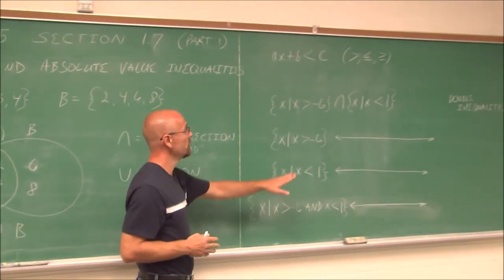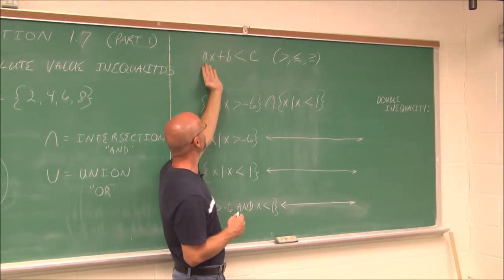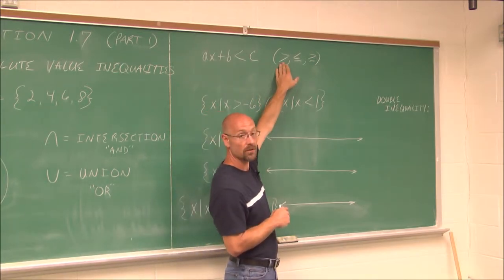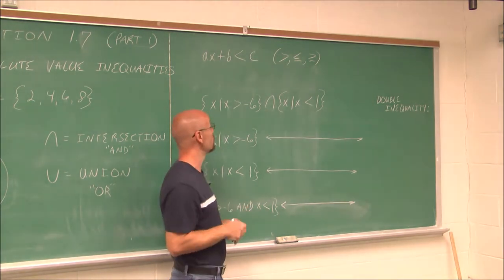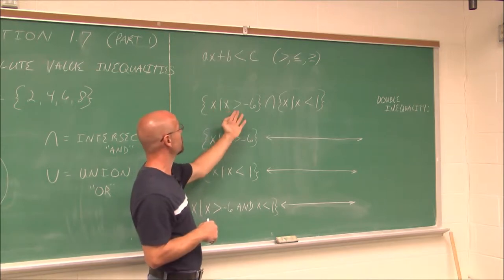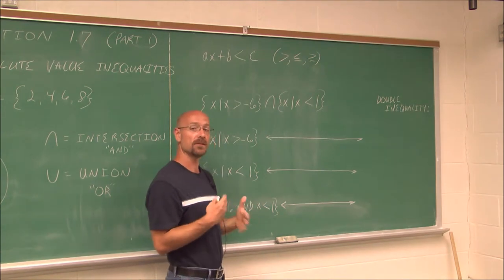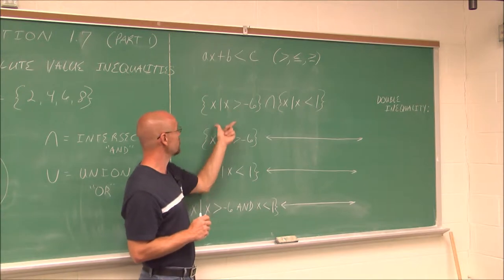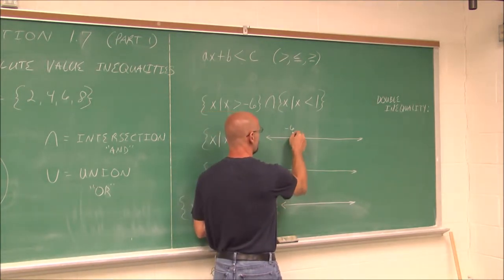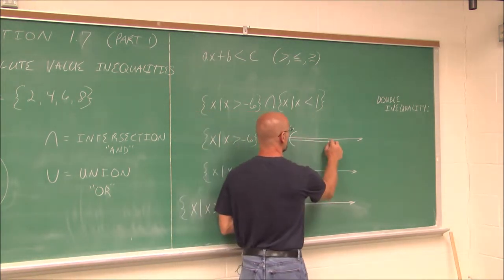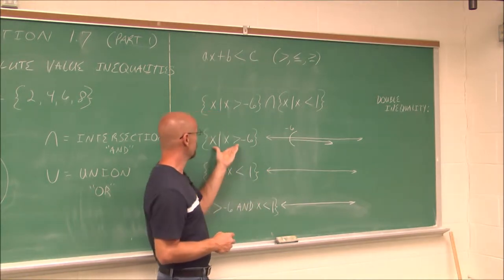Let's look at some examples involving an intersection. We have linear inequality symbols: less than, greater than, less than or equal to, greater than or equal to, and we're also going to use interval notation. If we have the set X such that X is greater than negative 6, and X such that X is less than 1, we want to look at these two together and see where they overlap.